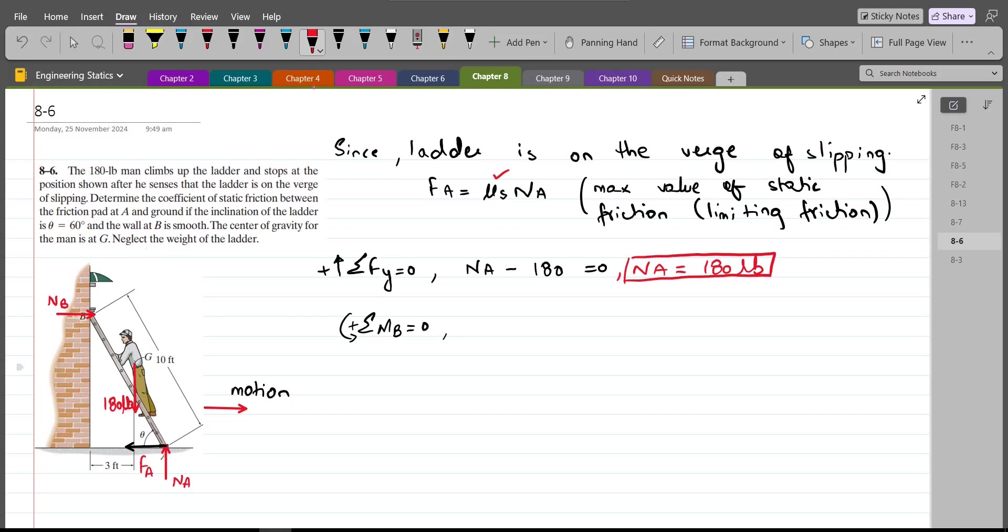This 180 lb force which has a line of action, let me extend it. This 180 lb force is trying to rotate the ladder in clockwise direction about point B. So the moment produced by this 180 lb force will be taken as negative.